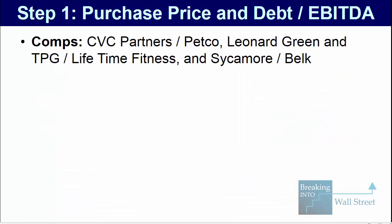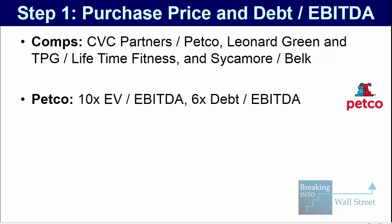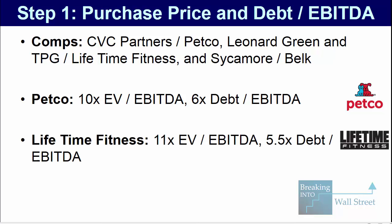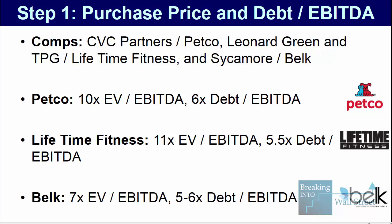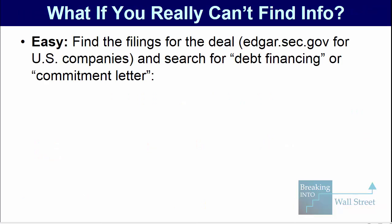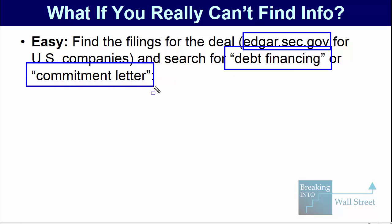Those are three comparables, and just by looking up the press releases and the basic information there, you can get a lot of these numbers. If you can't find them in press releases, just go to the edgar.sec.gov site for US-based companies, find some filings from around the time the deal was announced, and then search for terms like 'debt financing' or 'commitment letter' to find what you're looking for.